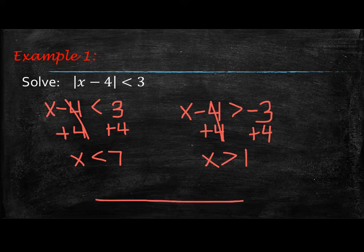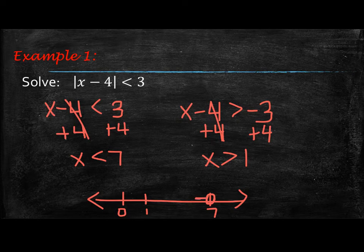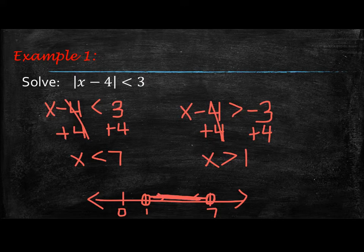Now if I were to graph that on the number line — here's my 0, here's 1, and here's 7 — x is less than 7 will have an open circle and shade to the left. x greater than 1 would be an open circle and shade to the right. When those two arrows come together, it's going to be an AND statement, or a between statement.